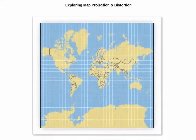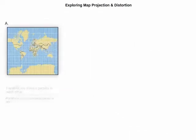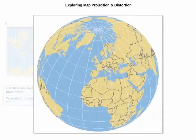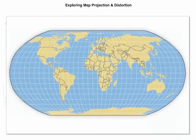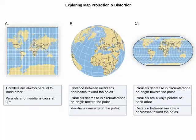What do the properties of the graticule, the intersecting lines of latitude and longitude, tell us about the distortion on each of these map projections? Remember that a given map projection can only accurately depict certain graticule properties, and that others will be distorted.